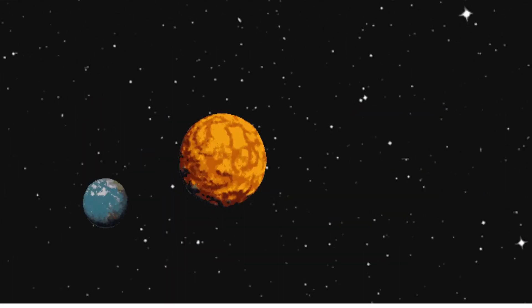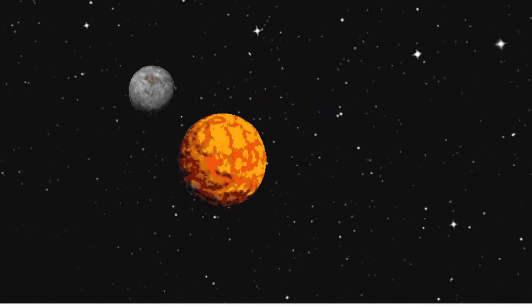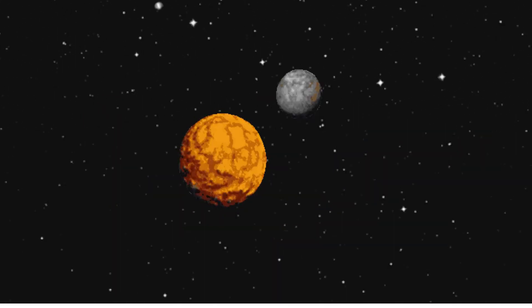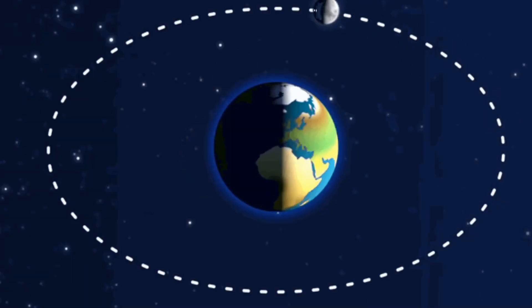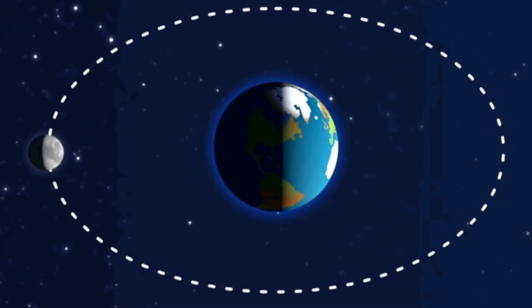Our Earth is a planet which revolves around the sun. The moon revolves around the Earth. Therefore, it is called a satellite.